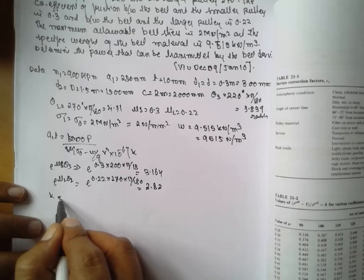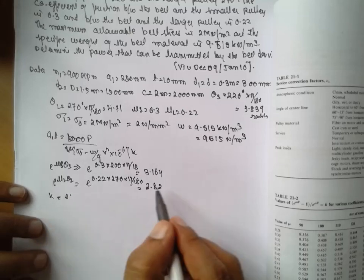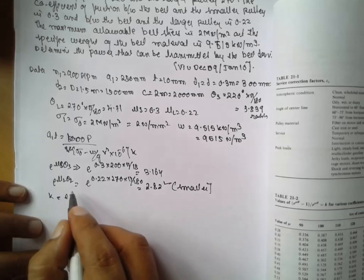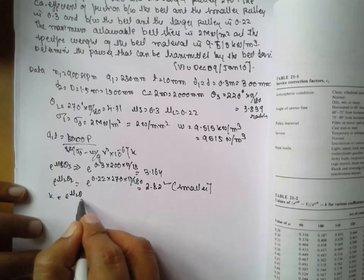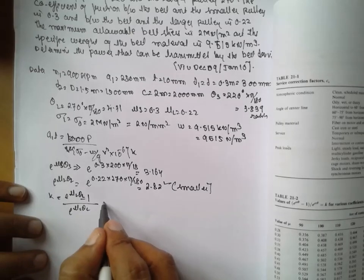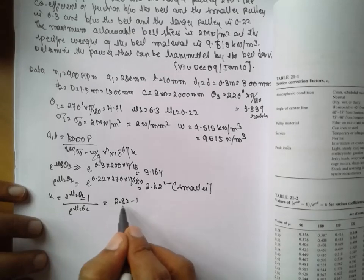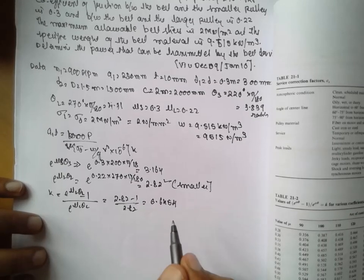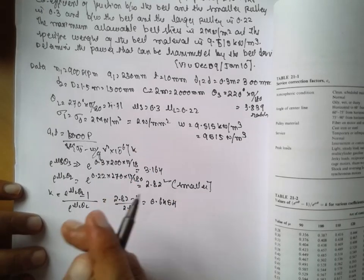Now find out K equals E to which one? Which one is smaller here? This is the smaller, so you have to consider the smaller here. Therefore, mu L theta L minus 1. E raised to mu L theta L is nothing but 2.82 minus 1 divided by 2.82. Answer will be 0.6454. K value. Once you know the K value, you can substitute.